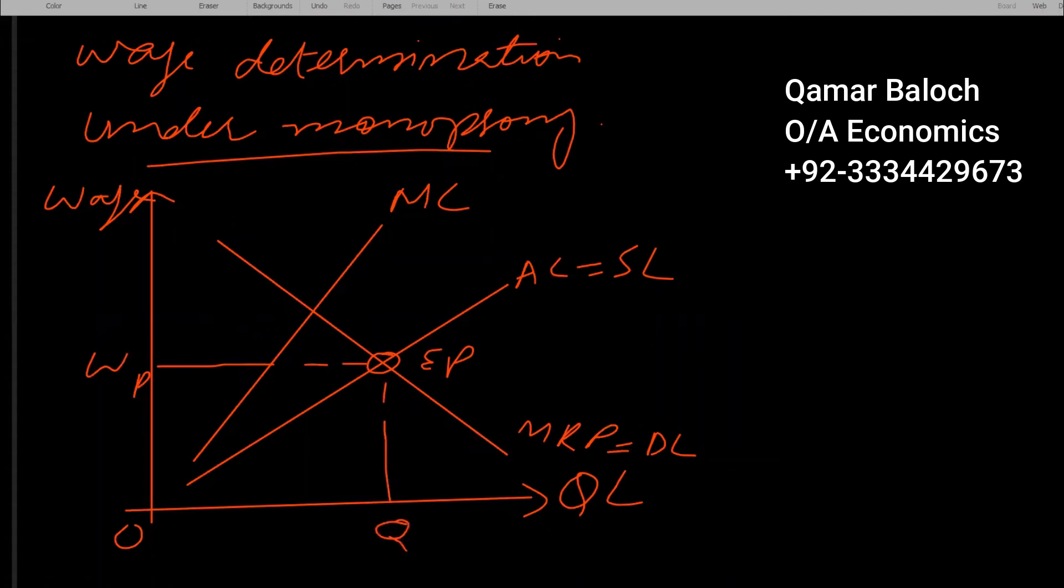Monopsony employer having monopsony power sets equilibrium at em, at en, and we can drop perpendicular to find out the level of employment under monopsony. Monopsony employer will employ qn number of workers, which is lesser than the equilibrium employment under perfectly competitive market or under demand and supply of labor.